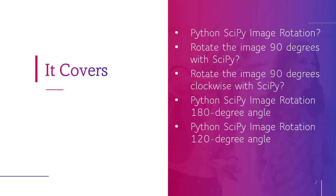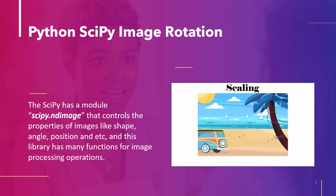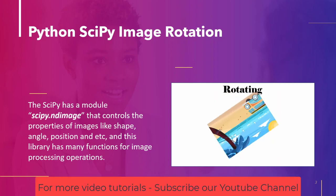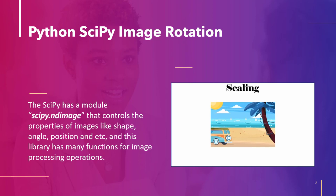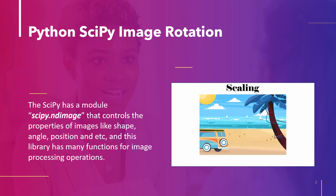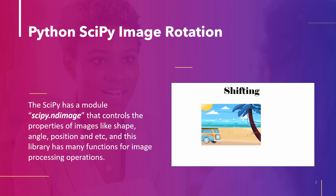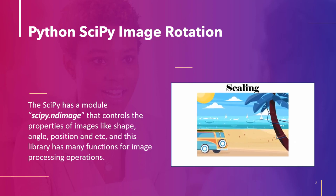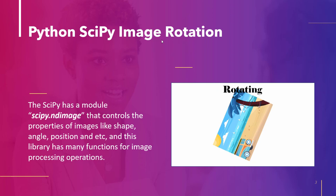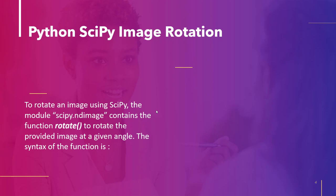Now let's move to the first topic: Python SciPy image rotation. SciPy contains a module called SciPy.ndimage that controls image properties such as shape, angle, and position among other things, and this library has a lot of functions for image processing — including scaling, rotating, and shifting. We can perform all of these basic operations using the methods that exist within the module SciPy.ndimage.